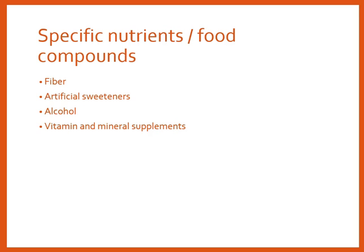There are specific nutrients and compounds people often ask about regarding blood sugar control. Fiber is a carbohydrate our bodies can't fully break down, so it doesn't contribute to rising blood sugar as much as other nutrients — though high-fiber foods usually contain other forms of carbohydrate as well. Artificial sweeteners are typically non-nutritive sweeteners that don't have calories and are not going to affect blood sugar levels, though people may have other concerns about them beyond blood sugar.